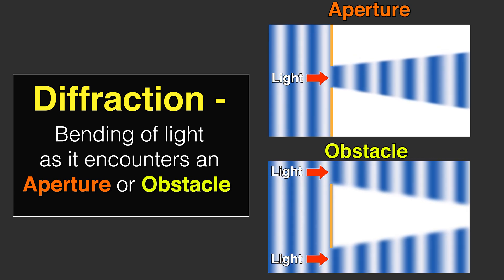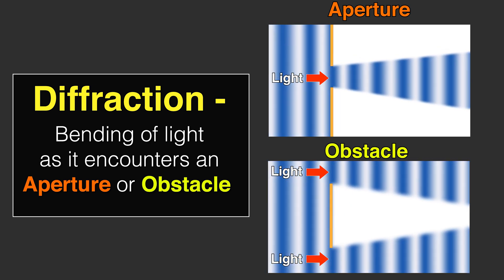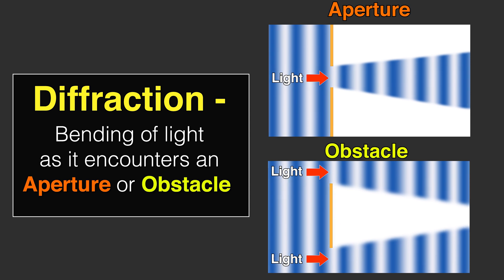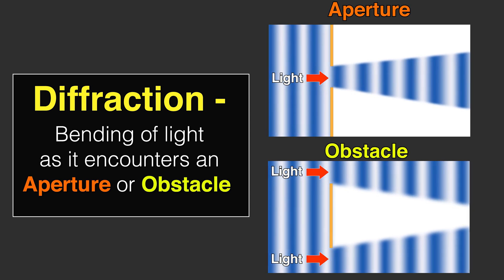There's actually a slight bending of those light waves as they pass through an aperture, and as that aperture becomes smaller and smaller, the bending becomes more and more aggressive.